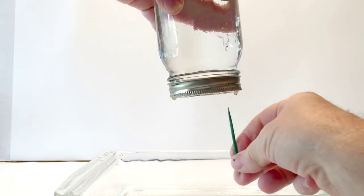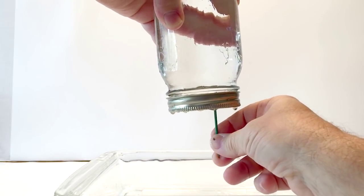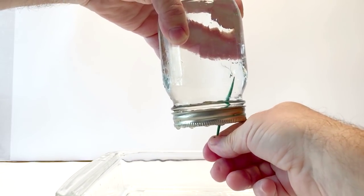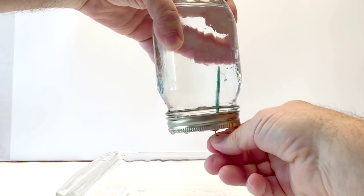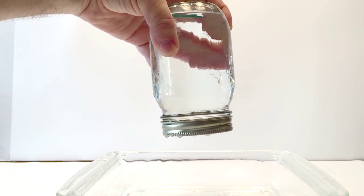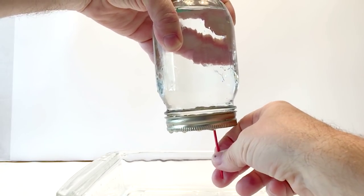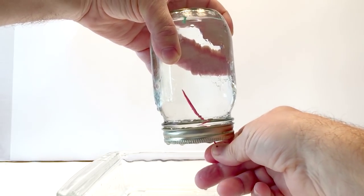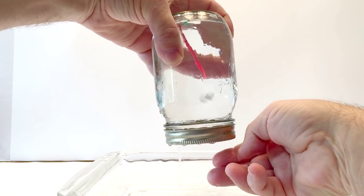Now we're going to take our toothpicks, and we're going to push them through the jar and all the way to the top, just like that. So a little bit of water escapes, a little bit of bubbles, but eventually just pushing the toothpicks all the way through. Pretty awesome to go all the way there.